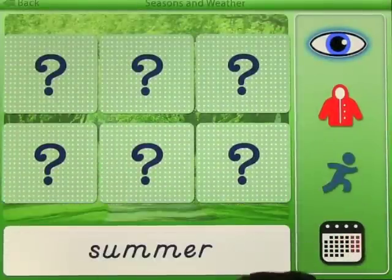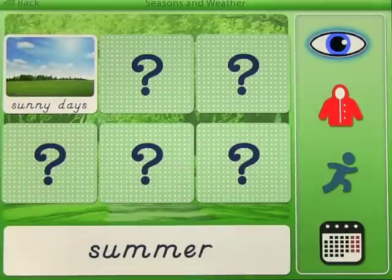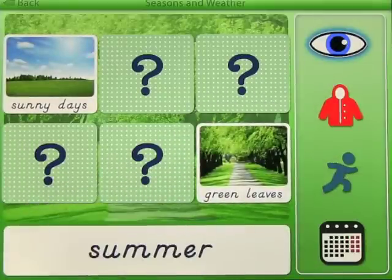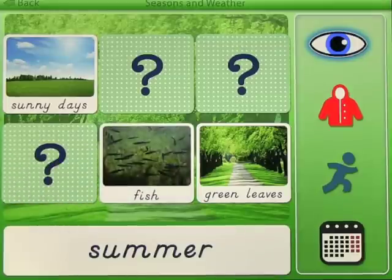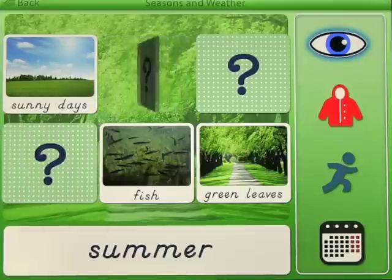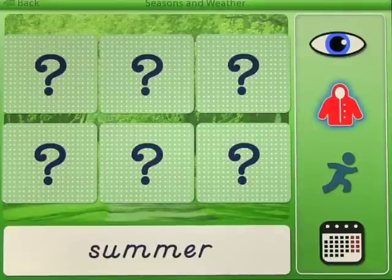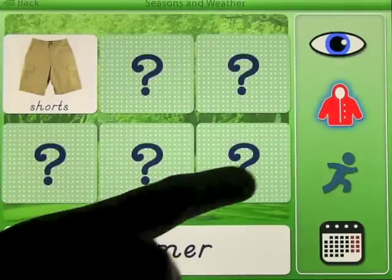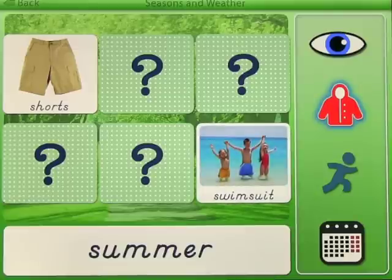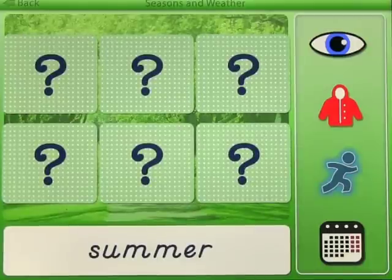You've got four things on the right-hand side. During summer you can see sunny days, green leaves and trees, fish swimming in lakes and rivers, and butterflies. If we click on the clothing option, it explores what you can wear during summer — you can wear shorts and a swimsuit.